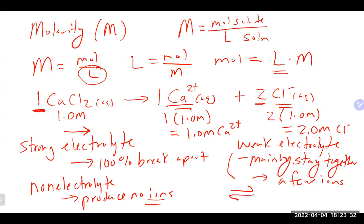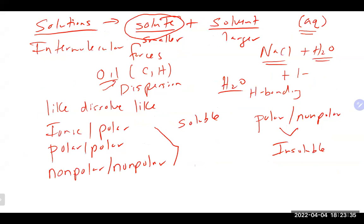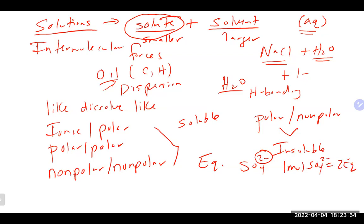We also talked about equivalents and milliequivalents, which are related to the charge. For example, sulfate has a 2⁻ charge, so one mole of sulfate equals two equivalents. The sign of the charge doesn't matter — just the number. This is used as a conversion factor for things like IV bags, which are sometimes labeled in equivalents per liter or milliequivalents per liter.